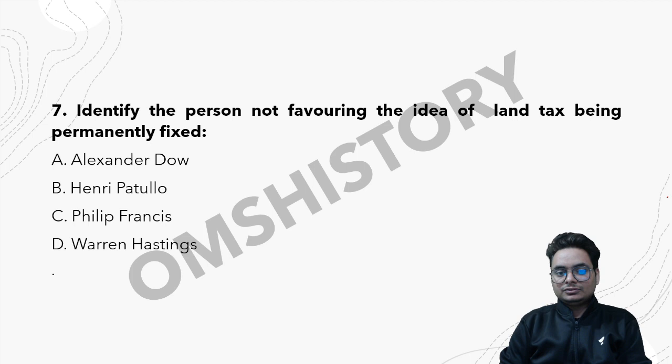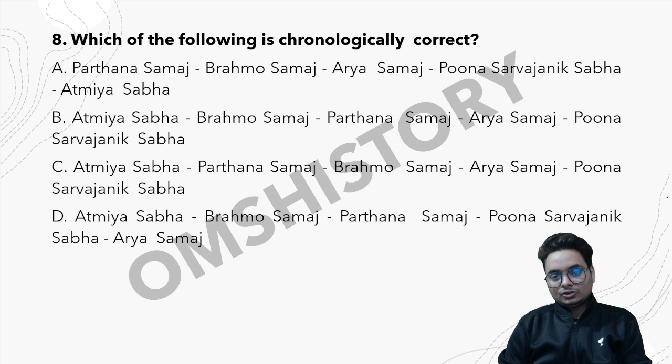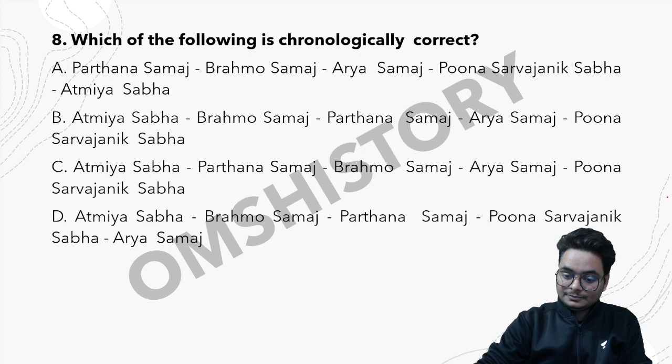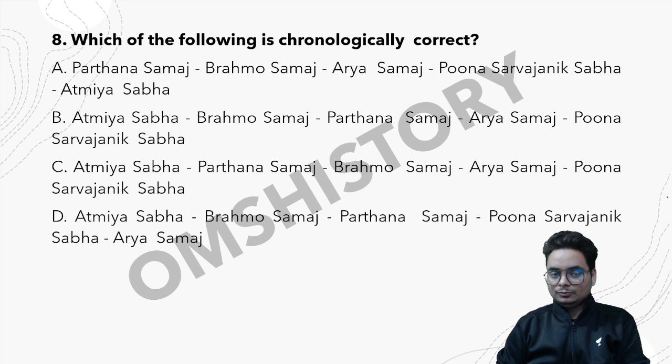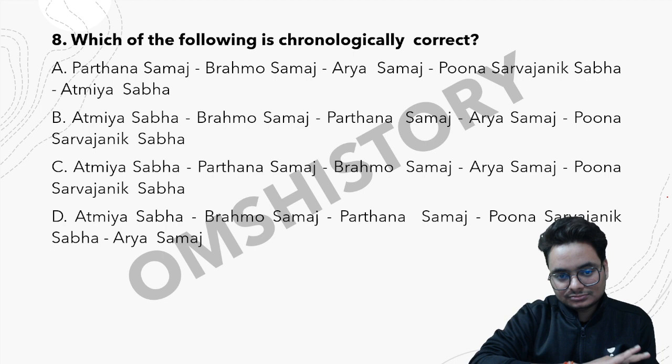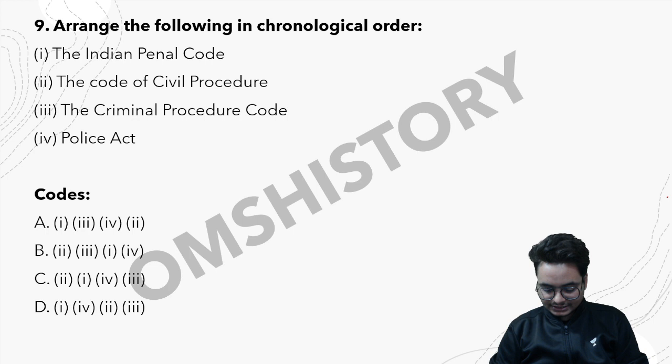The next question asks you to chronologically arrange these social and religious reform organizations — very important. After that, arrange the following in chronological order: the Indian Penal Code, the Code of Civil Procedure, the Criminal Procedure Code, and the Police Act. These are different acts that need to be sequenced.